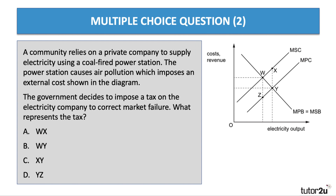Here's question number two. The community relies on a private company to supply electricity using a coal-fired technique. The power station causes air pollution which imposes an external cost shown in the diagram. The government then decides to impose a tax on the company to correct the market failure. What represents the tax? Please press the pause button.